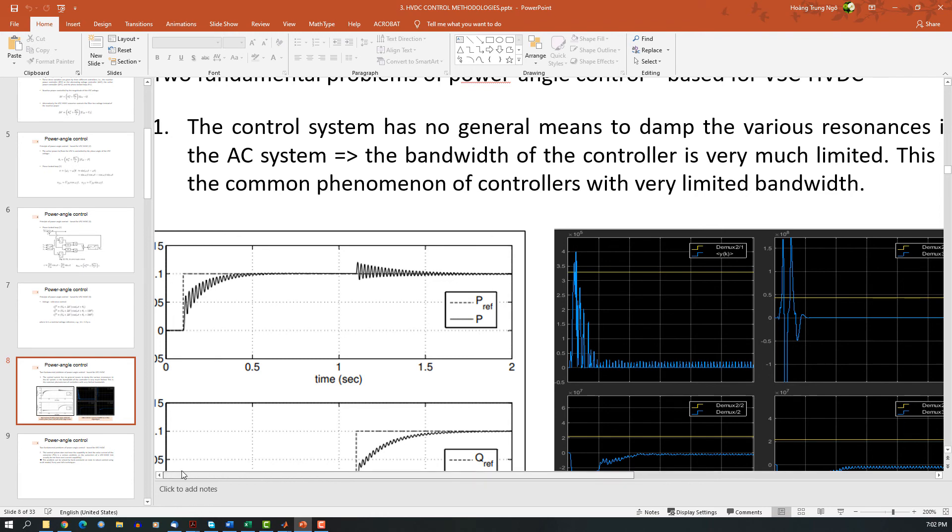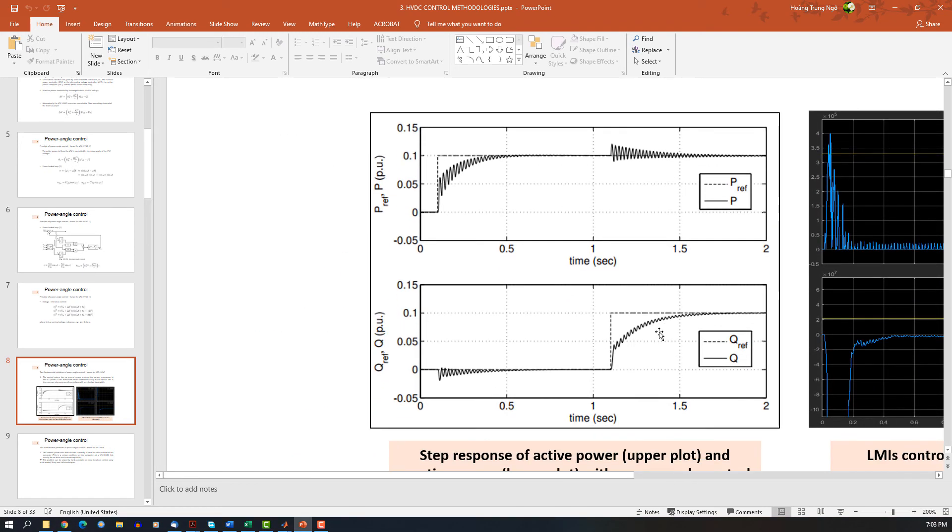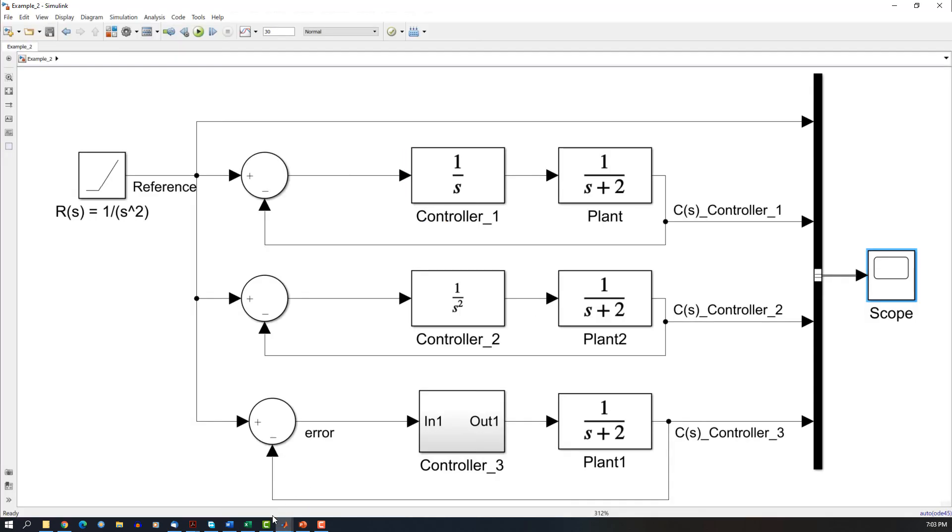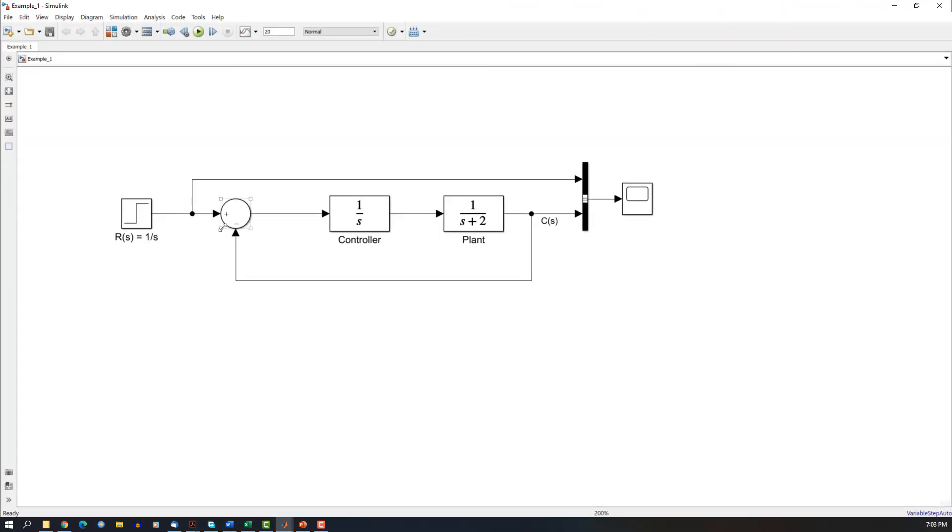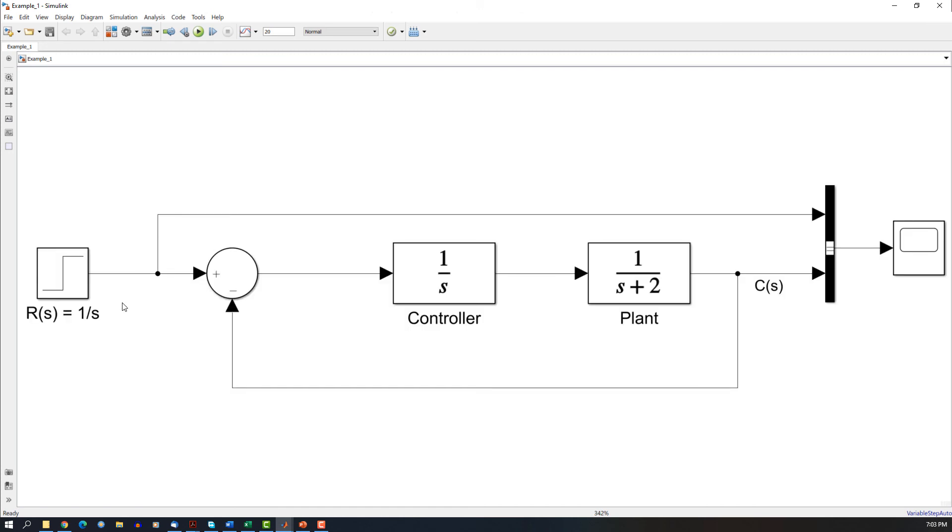In real-life applications, normally you will have to track a step like this. Like in this one, in power systems, normally they require only that you track a step. Which means that, as in Example 1, your reference has only one pole here, and your controller has to contain this pole. And that's why they require you to have an integral.